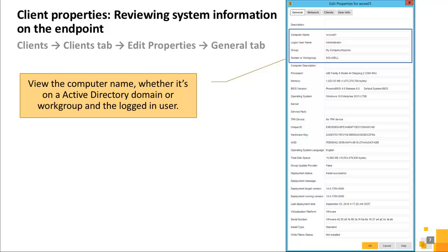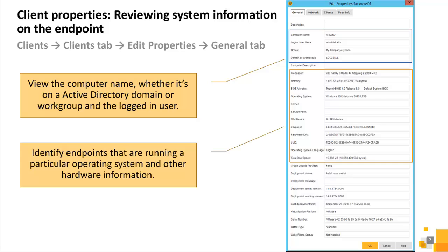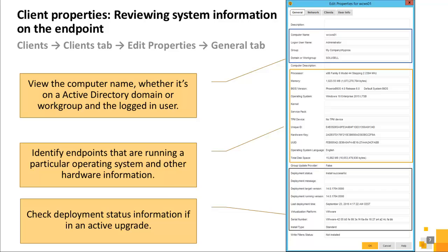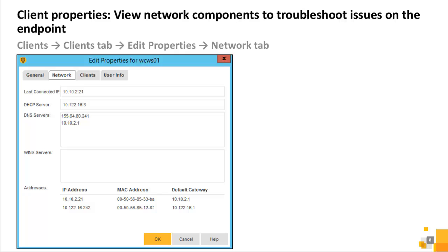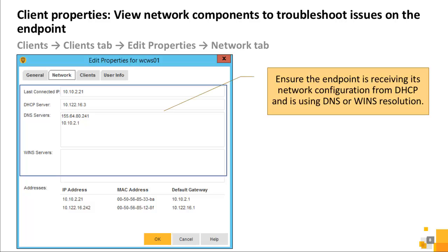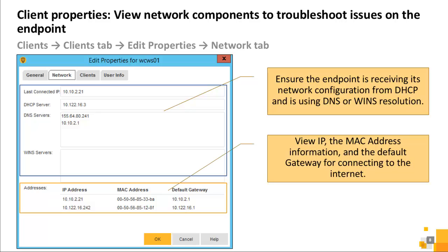The General tab provides system information about the computer. You can view the computer name, whether it is on an Active Directory domain or workgroup, and the logged-in user. System information is helpful when troubleshooting a variety of issues. If you are seeing an issue impacting a particular operating system or hardware, you can identify endpoints using it. You can also check deployment information if the environment is in an active upgrade, and view network components including IP address, MAC address, DNS or WINS resolution, and default gateway.